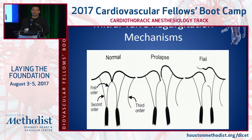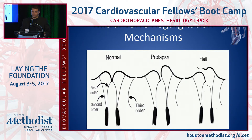Just to clarify the difference between a prolapse and a flail segment — I get that question a lot. The normal has the types of chordae tendineae. Prolapse means a part of the valve goes above the annulus plane. A flail segment means the edge of the valve leaflet, including chordae tendineae, is going completely above the annular plane.